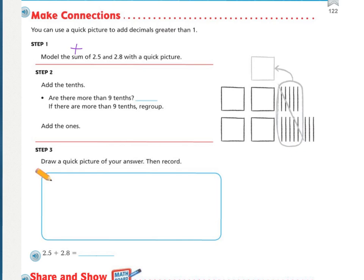So, after the picture, you start at the far right of your quick picture, and you add the tenths. Are there more than 9 tenths? Yes or no? Yes. And then, if there's more, we need to regroup, which is what they did here. They circled 10 of them and crossed them out. And they drew the arrow to add another tenth.